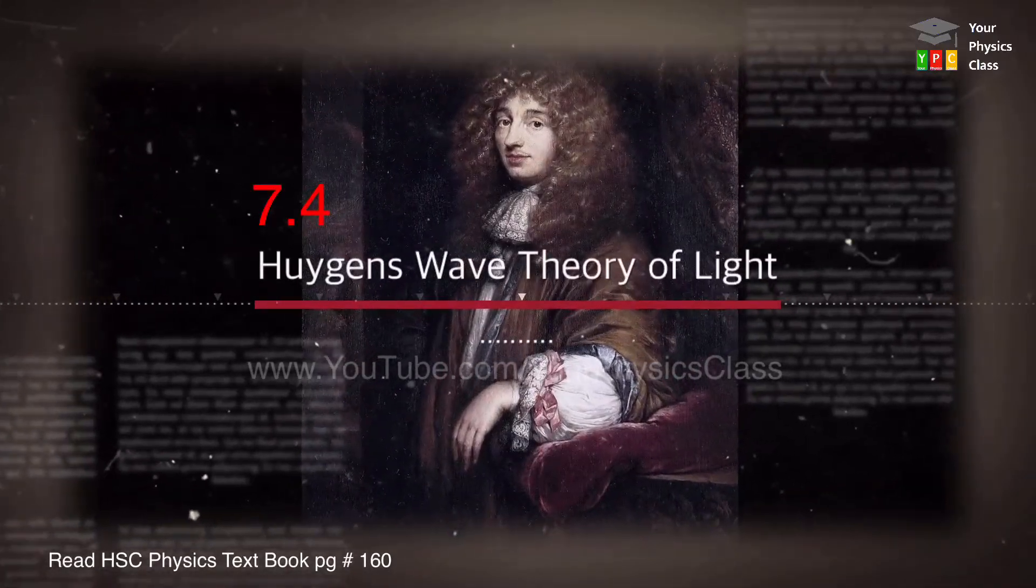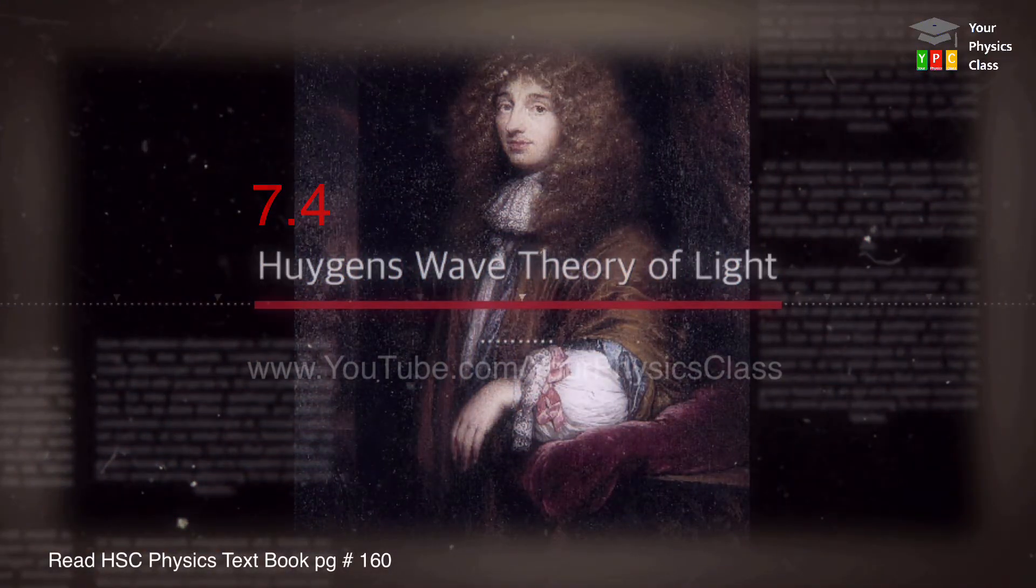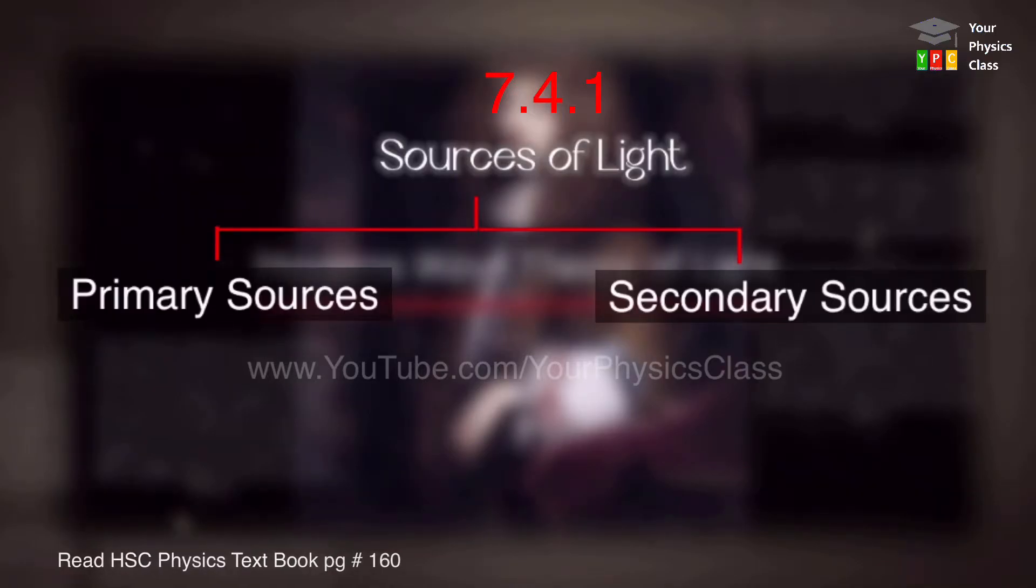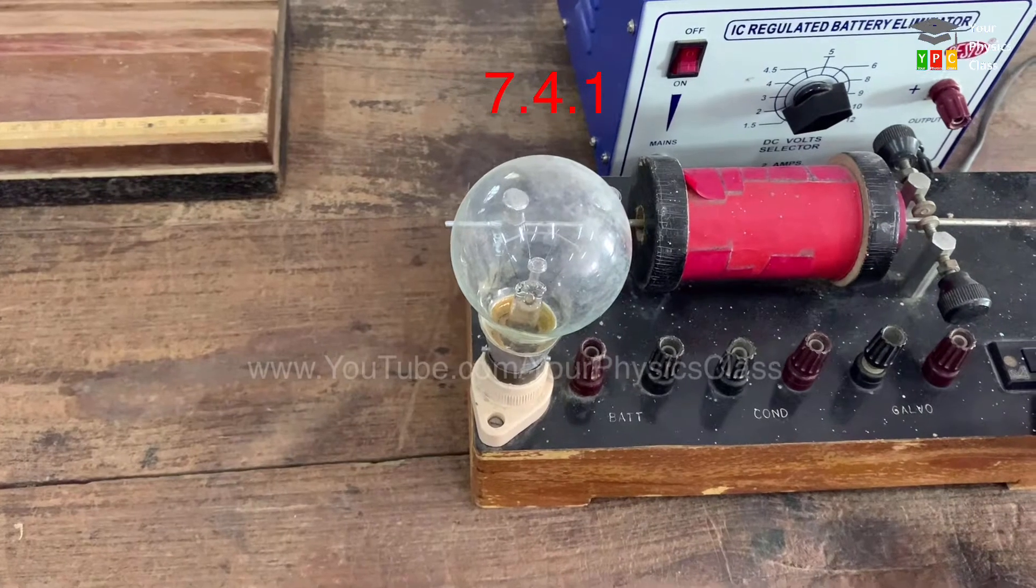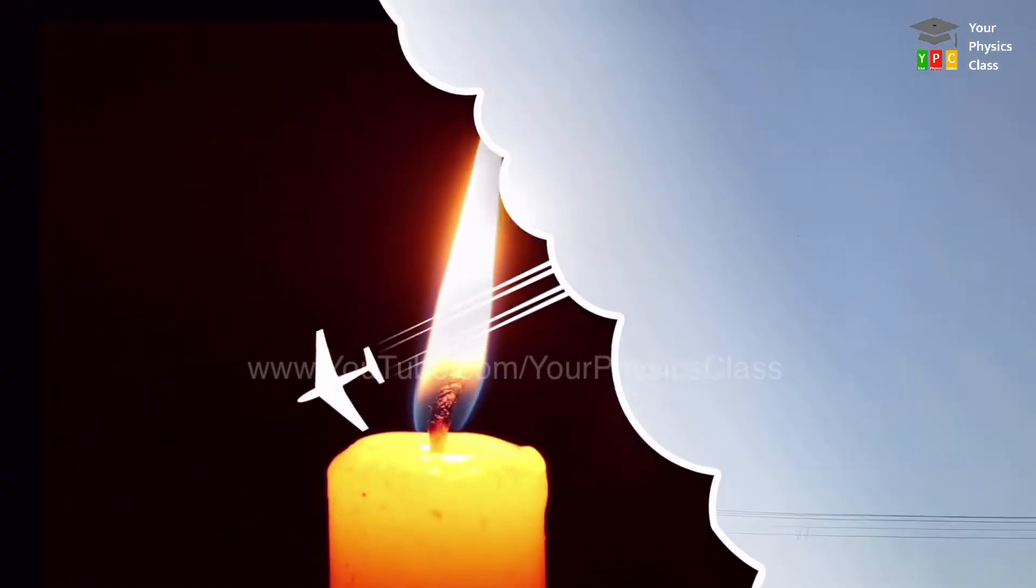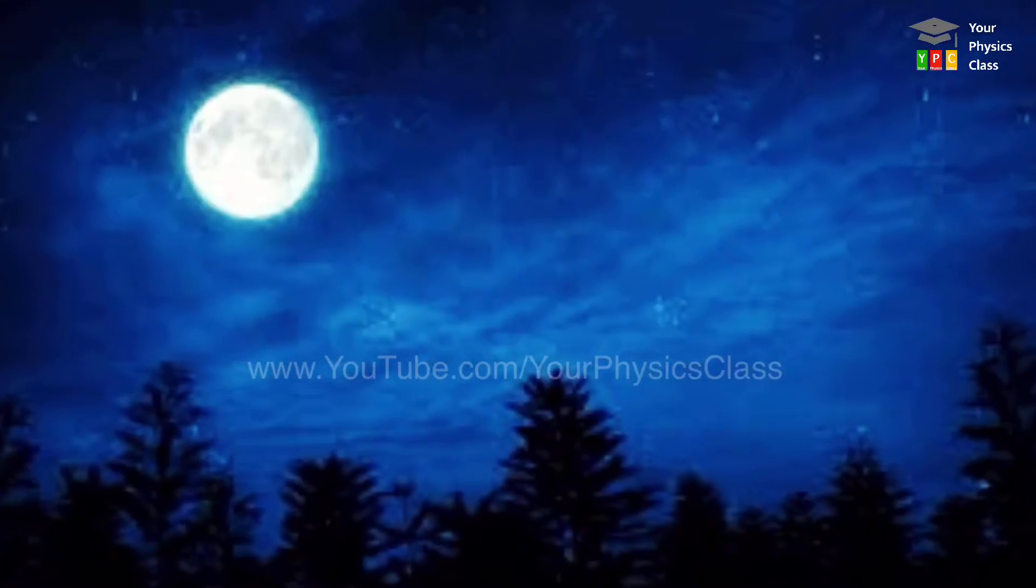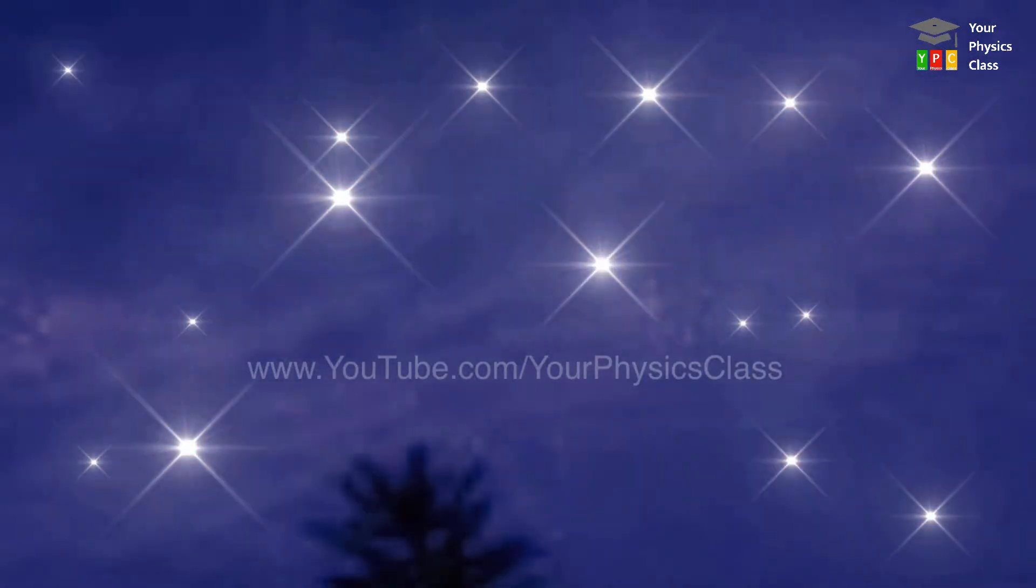Hi friends, today's topic is Huygens' wave theory of light. Let's start with the discussion of primary and secondary sources of light. We see several sources of light around us, for example, Sun, moon, stars, light bulbs, etc. are the examples of sources of light.